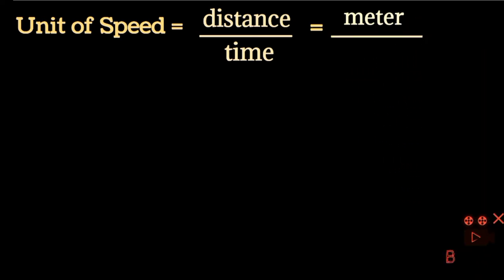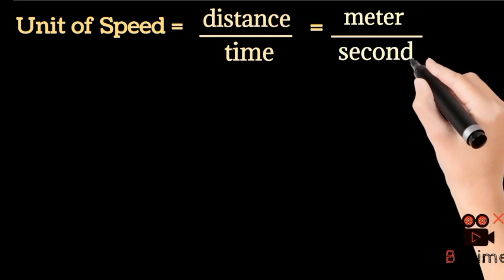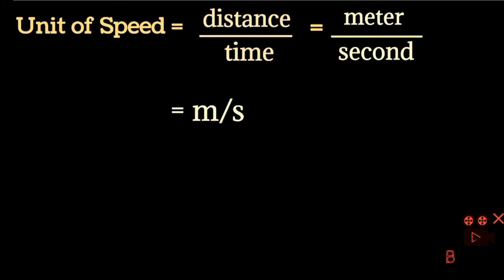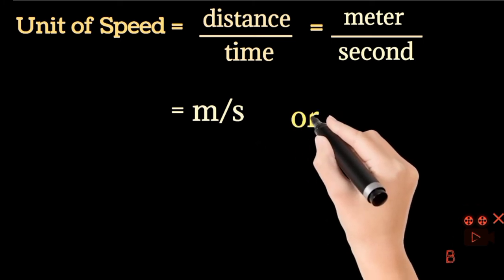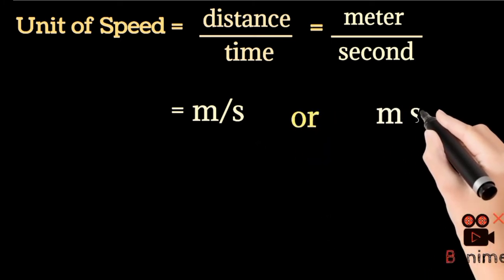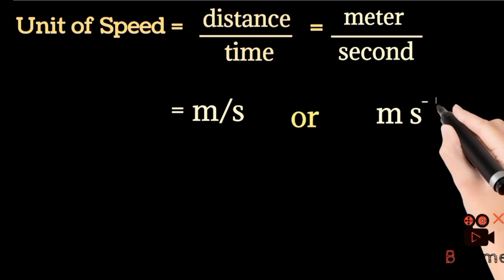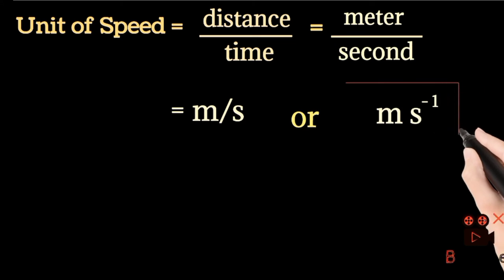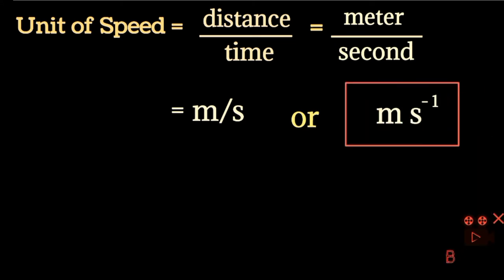And time, the unit of time is second. So meter divided by second, and we can say meter per second. The unit of speed is meter per second, and we can say meter second to the power minus one.